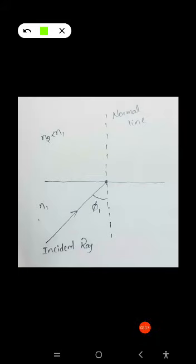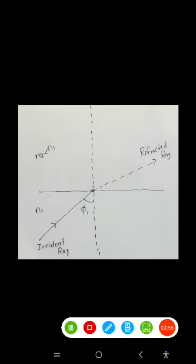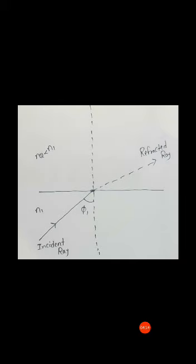The incident ray is striking at the boundary at a point. The light will slightly bend in another material. For example, if I take a pen and put it in water, that pen appears slightly bent — that is called refraction. Similarly, when we apply light here, it will be refracted, slightly bent in another material — that is the refracted ray.